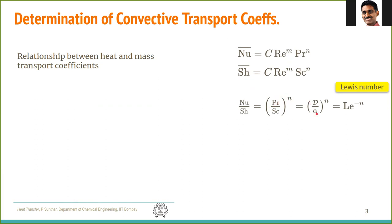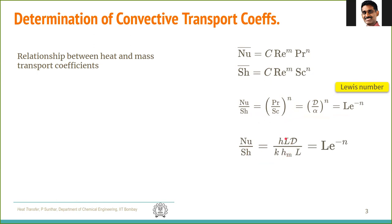Prandtl is nothing but ν/α and Schmidt is ν/D. So this factor is nothing but D/α, and D/α is given the name inverse Lewis number — the Lewis number being α/D. This is a material property, which is a function of just thermal diffusivity to mass diffusivity. So Nusselt by Sherwood equals Lewis number raised to the power minus n. Expanding, Nusselt is hL/k and Sherwood is h_m L/D. Canceling L, we have h/h_m times D/k equals Le^(−n).